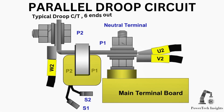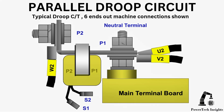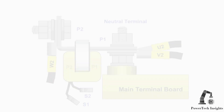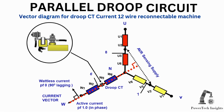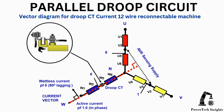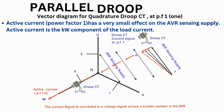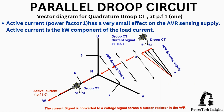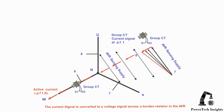This picture shows a typical droop CT 6-ins-out machine. This is the vector diagram for droop CT current on a 12-wire reconnectable machine. This is the vector diagram for quadrature droop CT at power factor 1. Active current at power factor 1 has a very small effect on the AVR sensing supply. Active current is the kilowatt component of the load current.